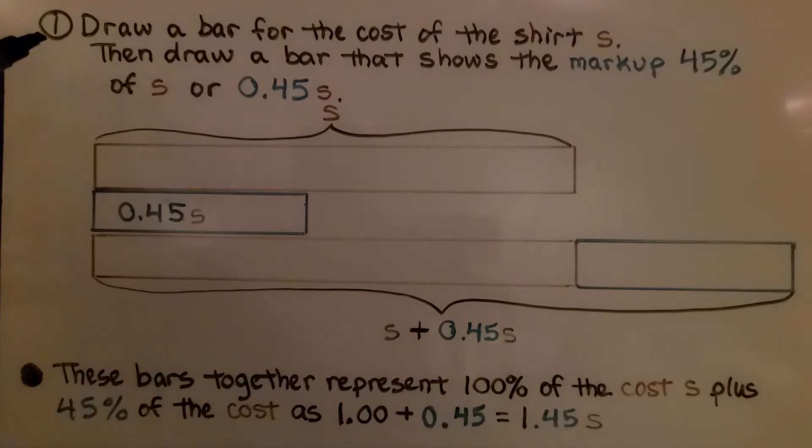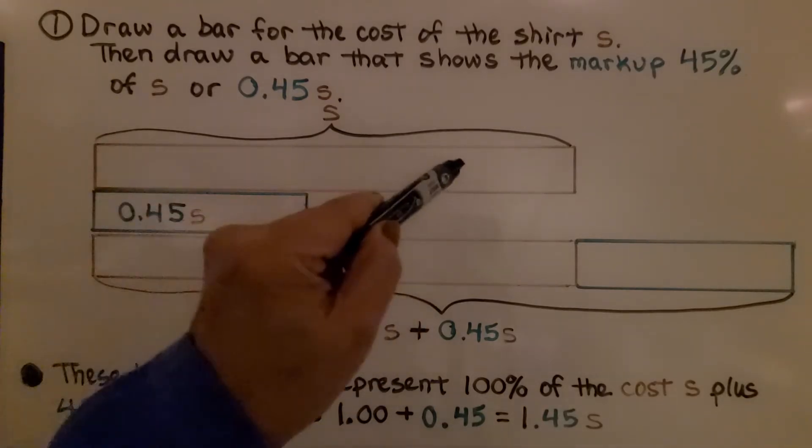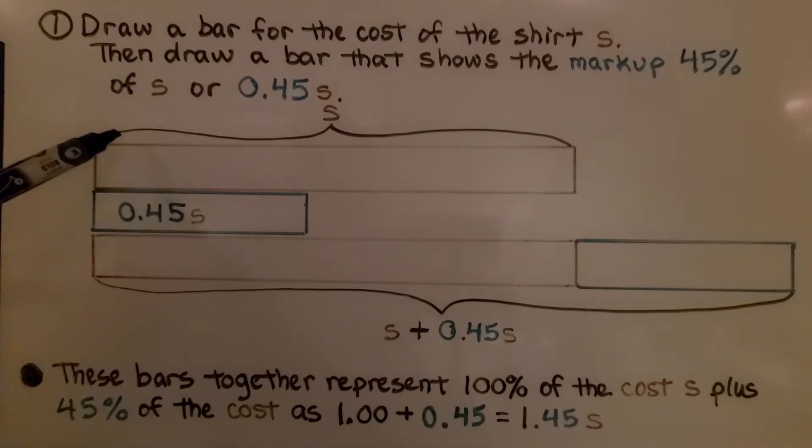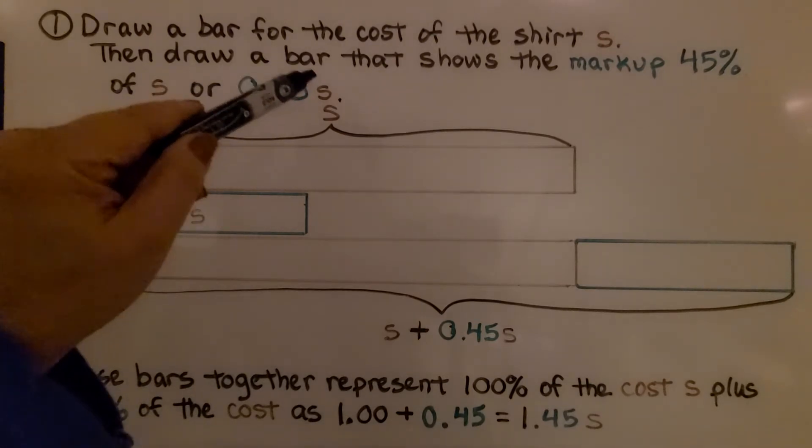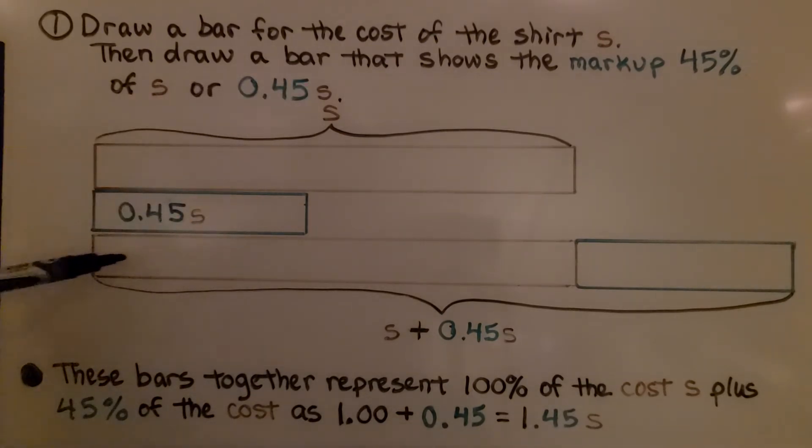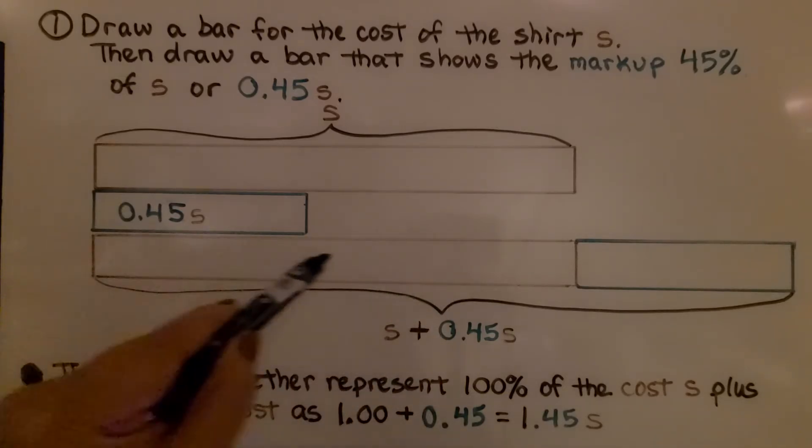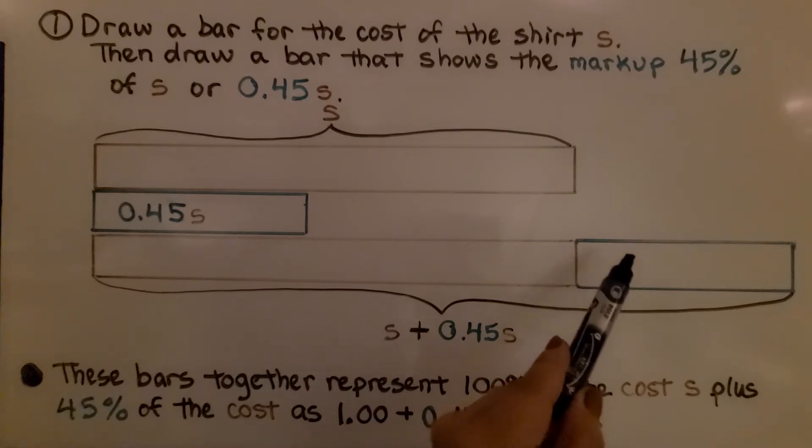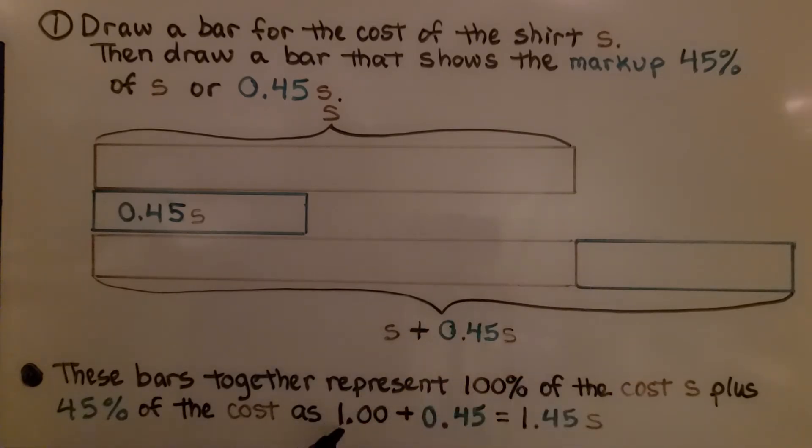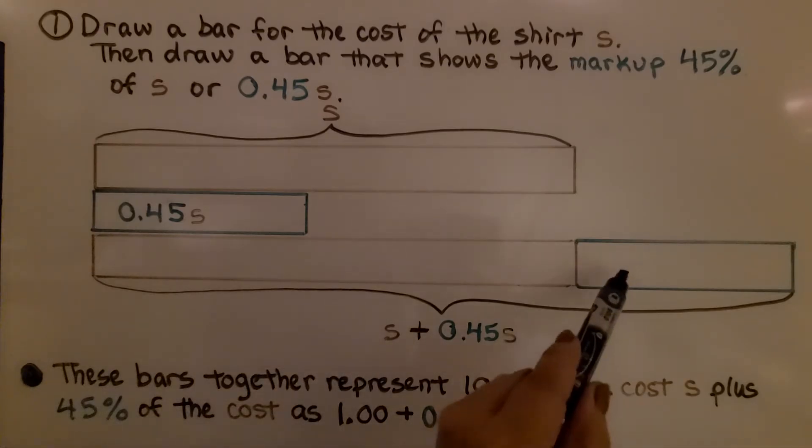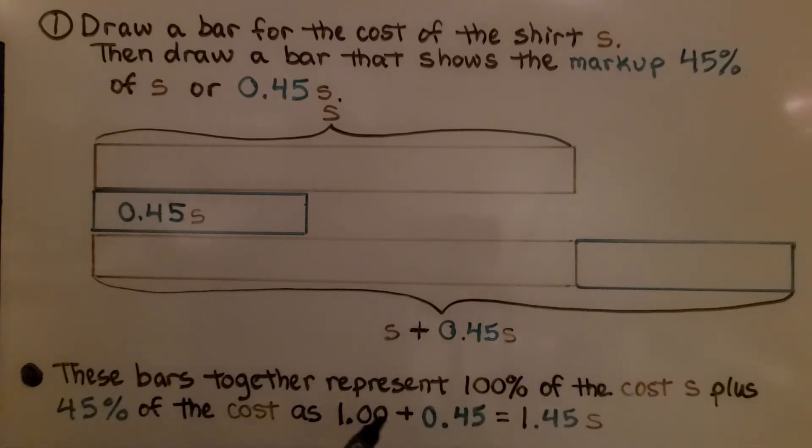The first thing we do is draw a bar for the cost of the shirt S. Then we draw a bar that shows the markup, 45% of S or 0.45 multiplied by S. These bars together represent 100% of the cost, that's S, plus 45% of the cost of S as one whole plus 45% more as 1 plus 0.45, which is equal to 1.45 multiplied by S.